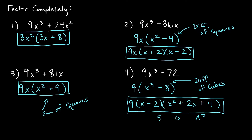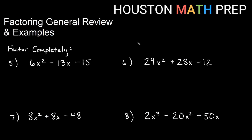Those were four similar-looking two-term problems that all worked out differently. Moving to three-term problems — trinomials. First: 6x squared minus 13x minus 15. Looking for GCF first: 6, 13, and 15 have a GCF of 1, and they don't all have an x, so we factor by grouping. We compute a times c: 6 times negative 15 equals negative 90. And b is negative 13. We need two numbers that multiply to negative 90 and add to negative 13.